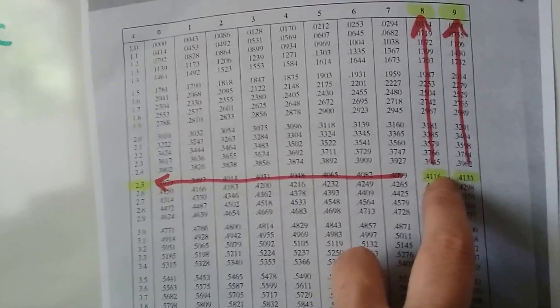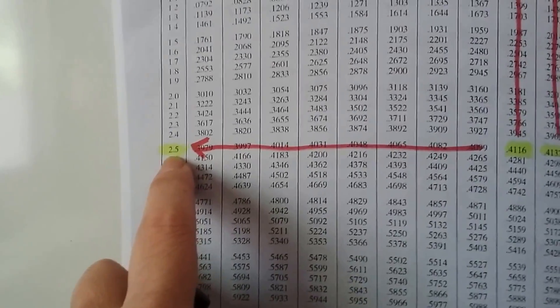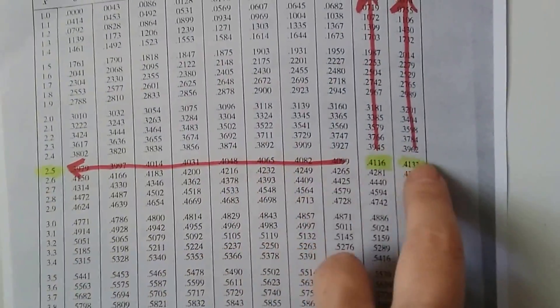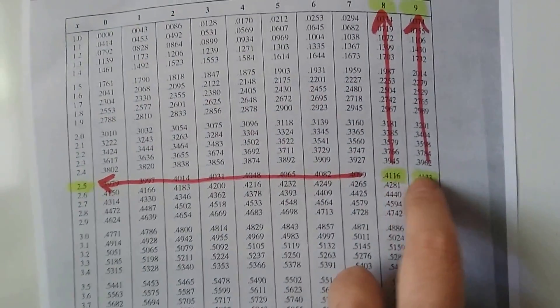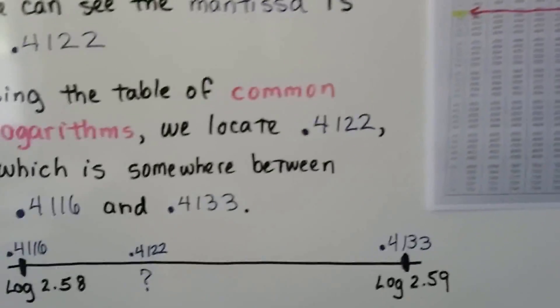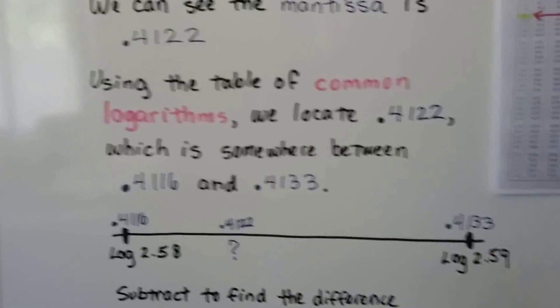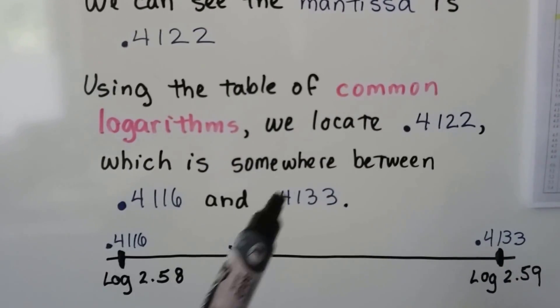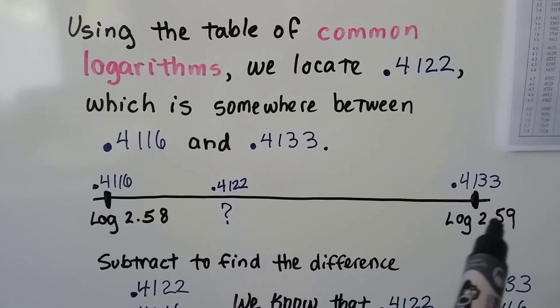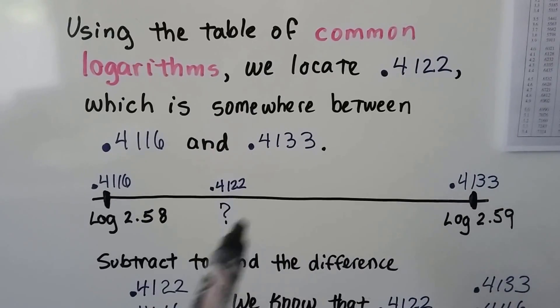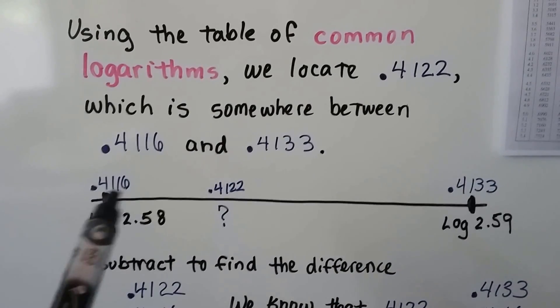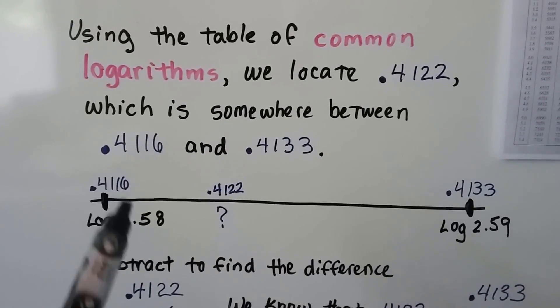So it's in between 2.58 and 2.59. It's somewhere in between these two numbers. So we know it's in between .4116 and .4133, and that's log 2.58 and log 2.59. It's somewhere around here. Because we've got .4122, so it's leaning a little bit closer to this one.